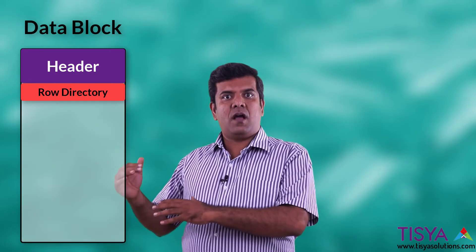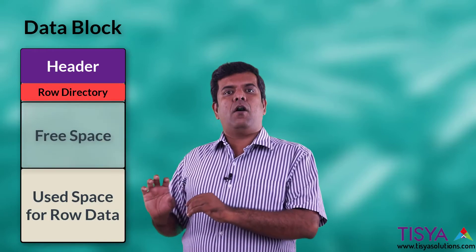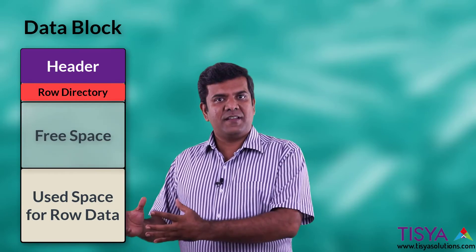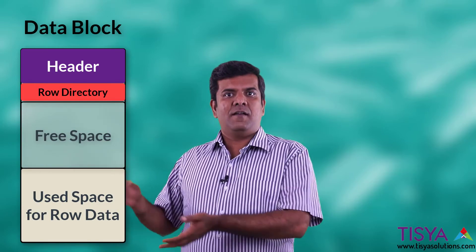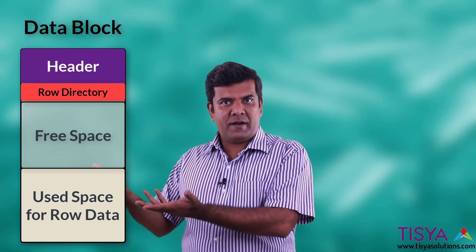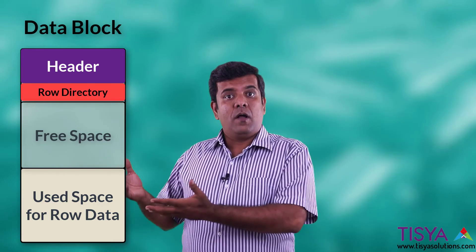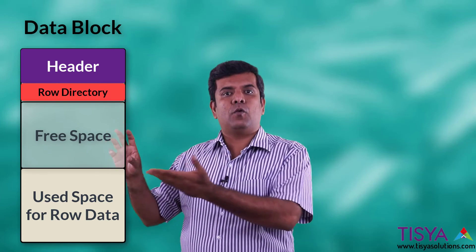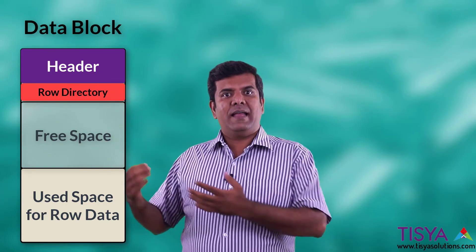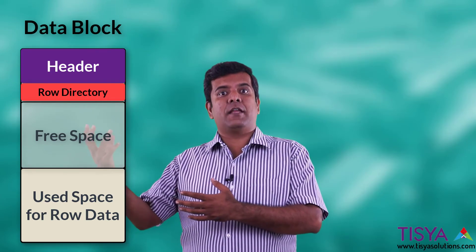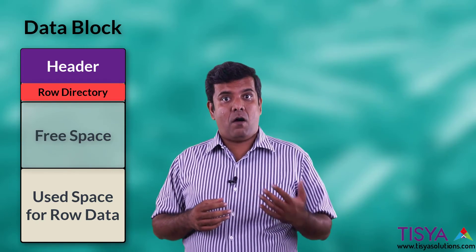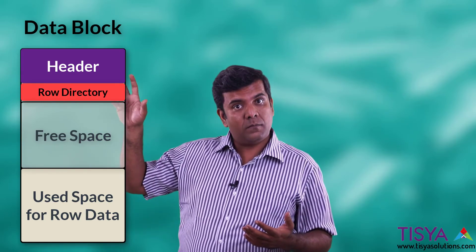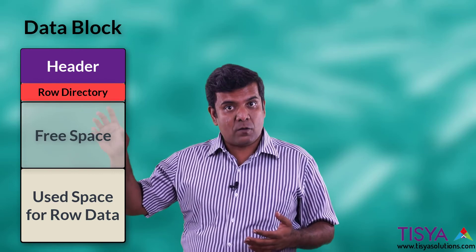Beyond the row directory, the block has free space and used space. Used space is where rows are present; free space is unoccupied space in the block. When there is free space, new rows can be inserted, existing rows can be updated and expand into that space, or the row directory and row header can grow to fill it. This is what is kept inside an Oracle data block.